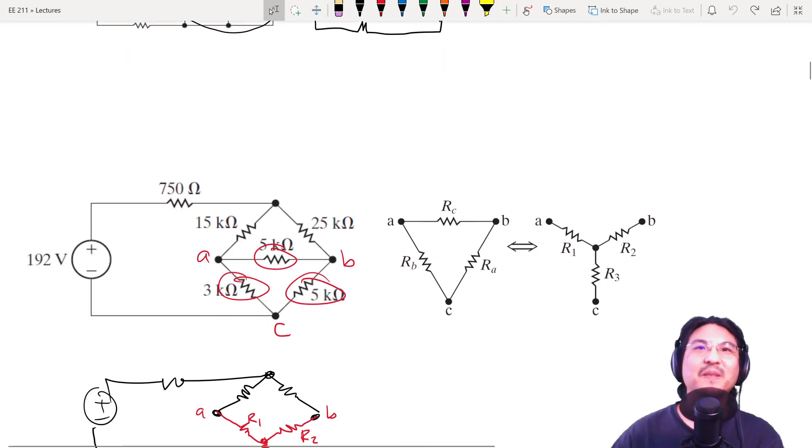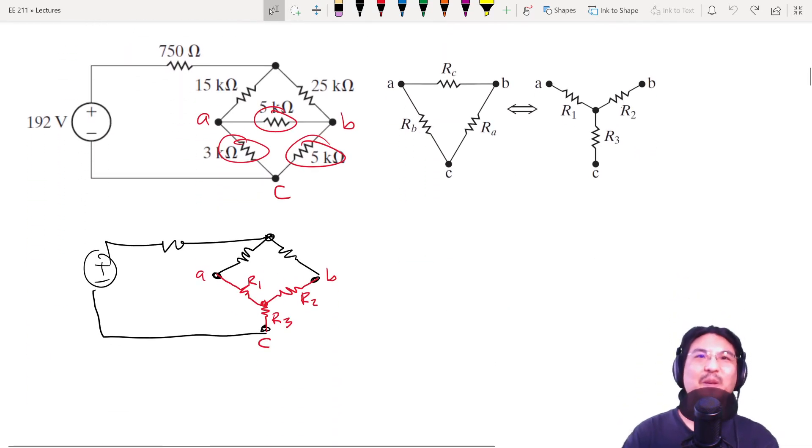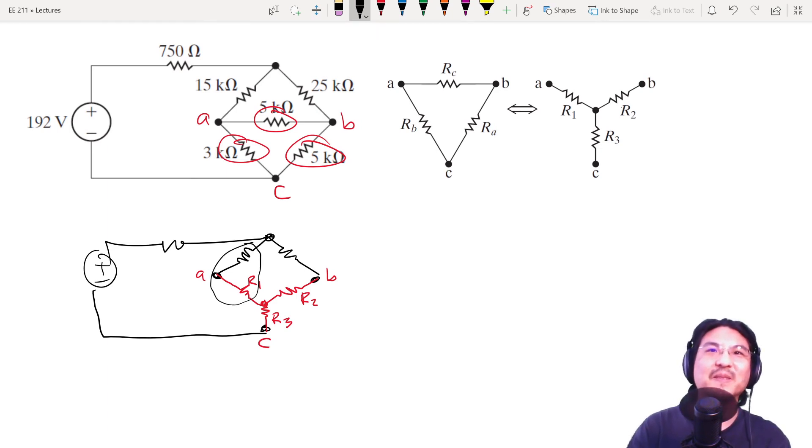Okay, so that looks like this, where this is R3, R2, R1. All right, so I replaced this delta with this Y. And then now, see if you can find the equivalent resistance? You can, right? Because look, these two in series, these two in series, and then you combine those in parallel, and then you have basically what looks like this, right? And then combine all that in series, and then you got it.